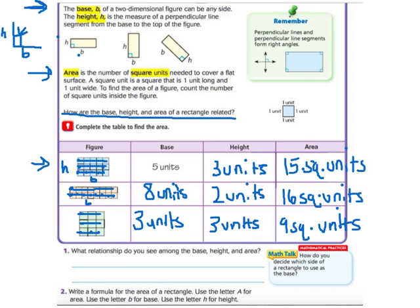Now, I don't know if you realized that to find the area here, all I had to do was 5 times 3. So, multiply the base times the height. Or, 8 times 2, which gives me 16, base times height. Or, 3 times 3 gives me 9, base times height.